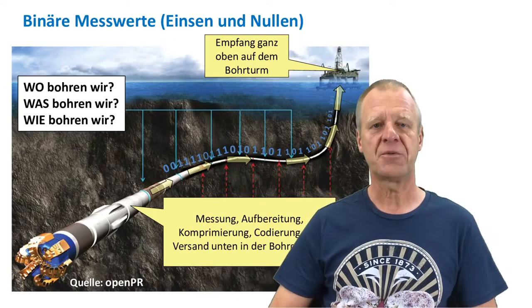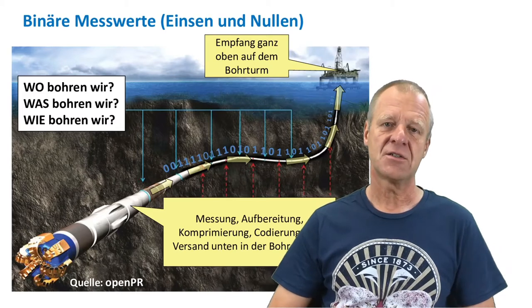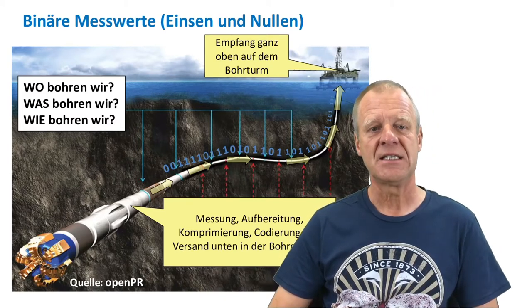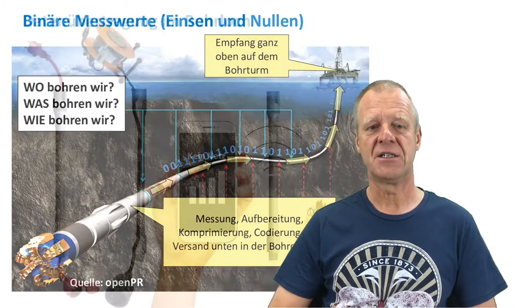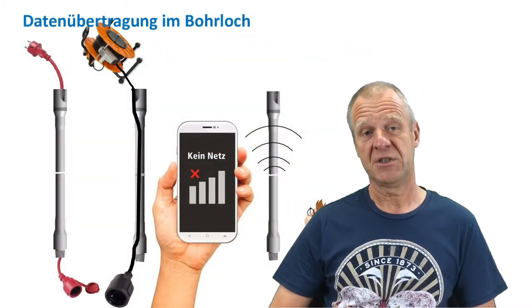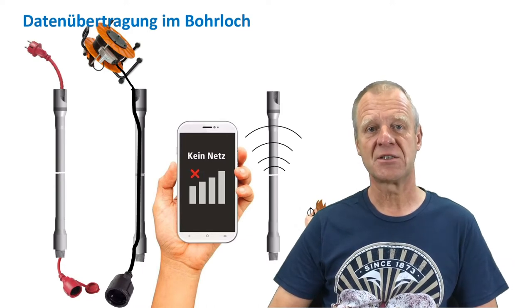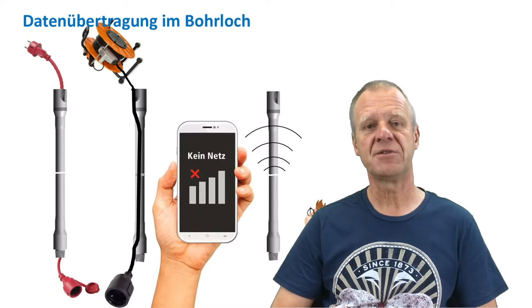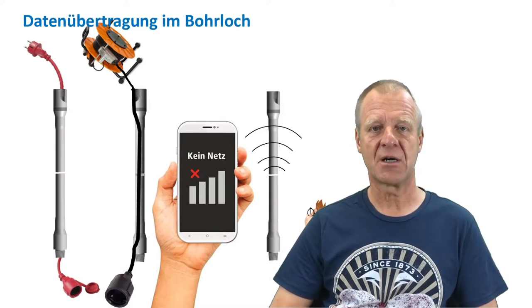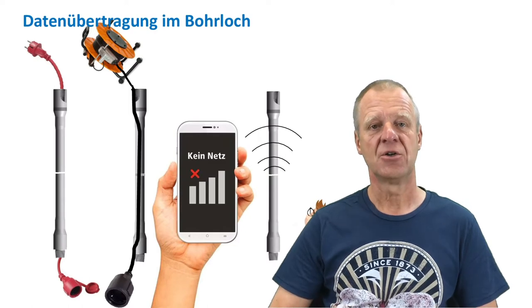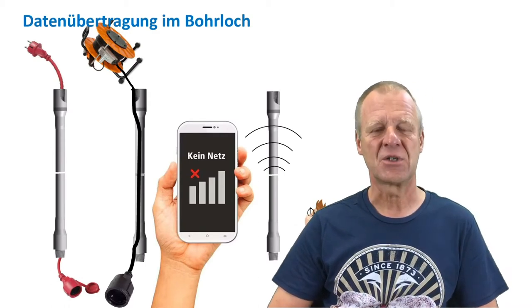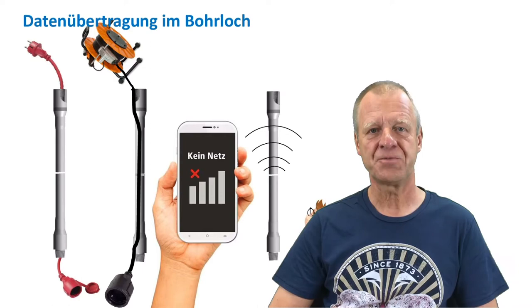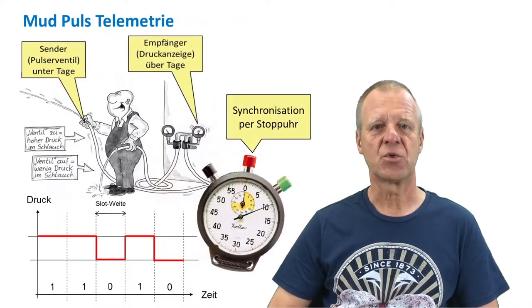This transfer of data to the surface — consisting of strings of zeros and ones — is very difficult in a borehole because many transfer methods will not work in a borehole environment. If you want to use a cable in the drill string, you would have to connect the cable every 10 meters before making up the thread connection between two pipes. If you place the cable on the outside of the drill string, it will get destroyed as soon as you start to rotate the drill string. Electromagnetic telemetry will also not work deep in the earth, and acoustic transmission via the metal drill string will also not work reliably over long distances. The only reliable method for deep holes is what we call mud pulse telemetry.